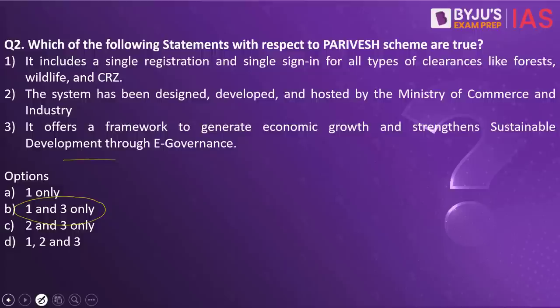All major clearances are done through data synchronization, making use of technology for transparent and effective decision-making without compromising on environmental safeguards and standards. This is in line with the spirit of Digital India and also captures the doctrine of minimum government and maximum governance. The Ministry of Environment has made sure that technology is used to ensure ease of doing business while also safeguarding the environment. The Parivesh portal streamlines all clearances with respect to environmental safeguards.